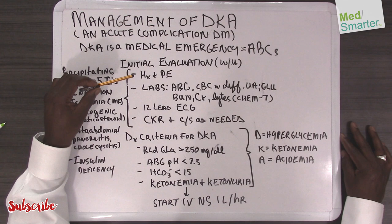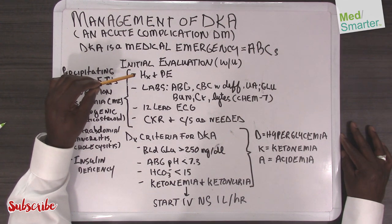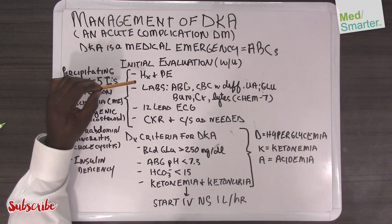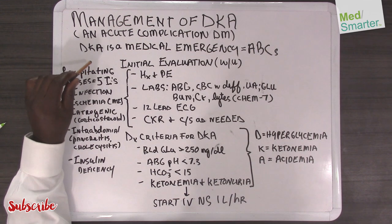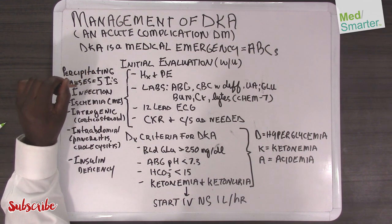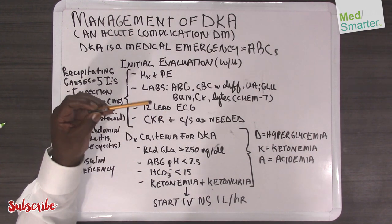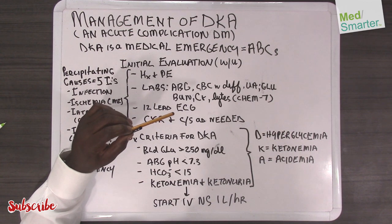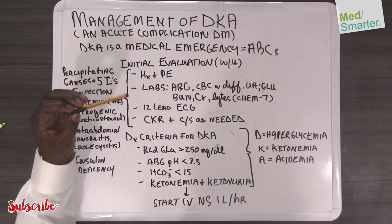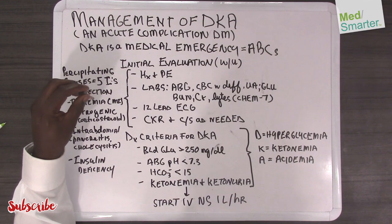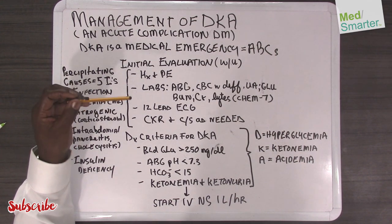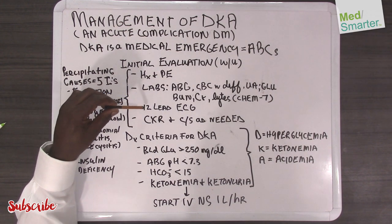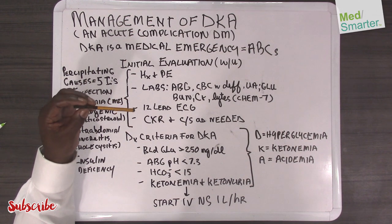Your initial evaluation in terms of history and physical examination is going to give you indications of the precipitating causes that we call the five I's. Infections — you'll see things like a fever and leukocytosis with a shift to the left in a young individual. Ischemia — whether or not it's myocardial infarction, cerebrovascular accident, or stroke; the 12-lead EKG will give you indications of the MI.